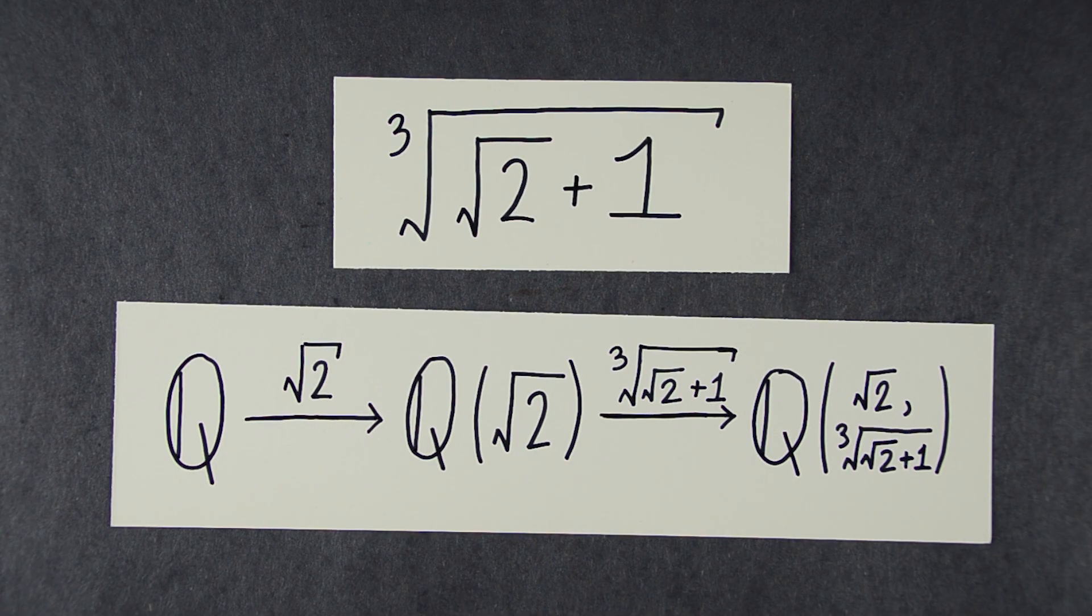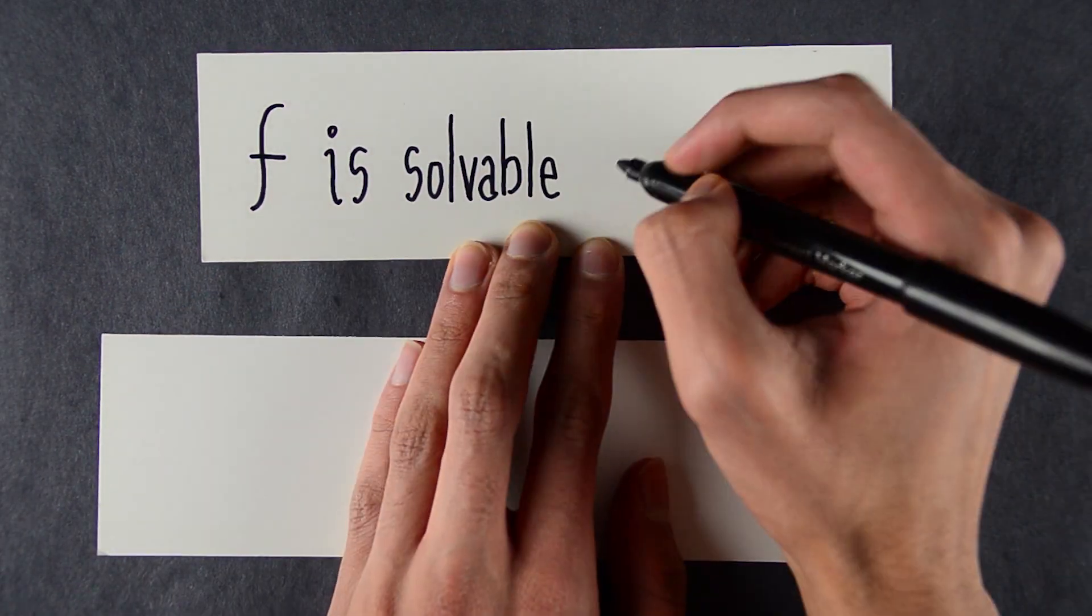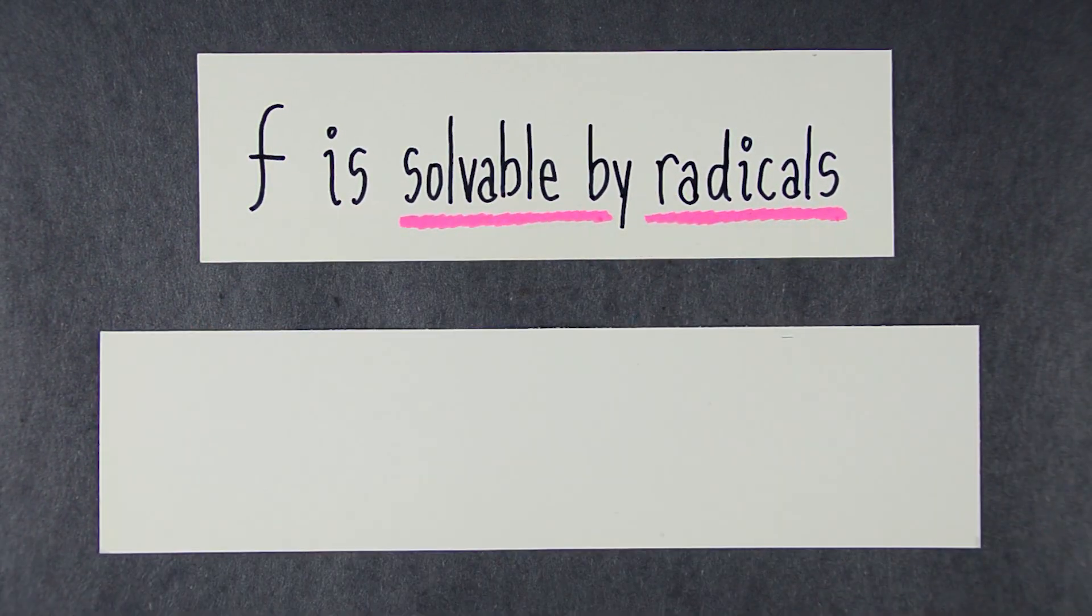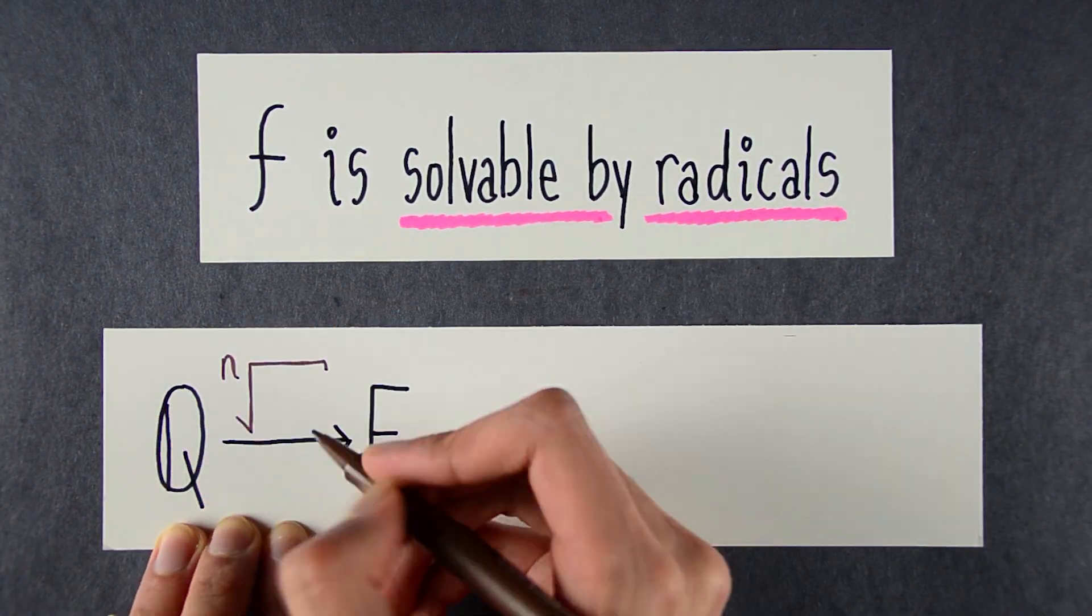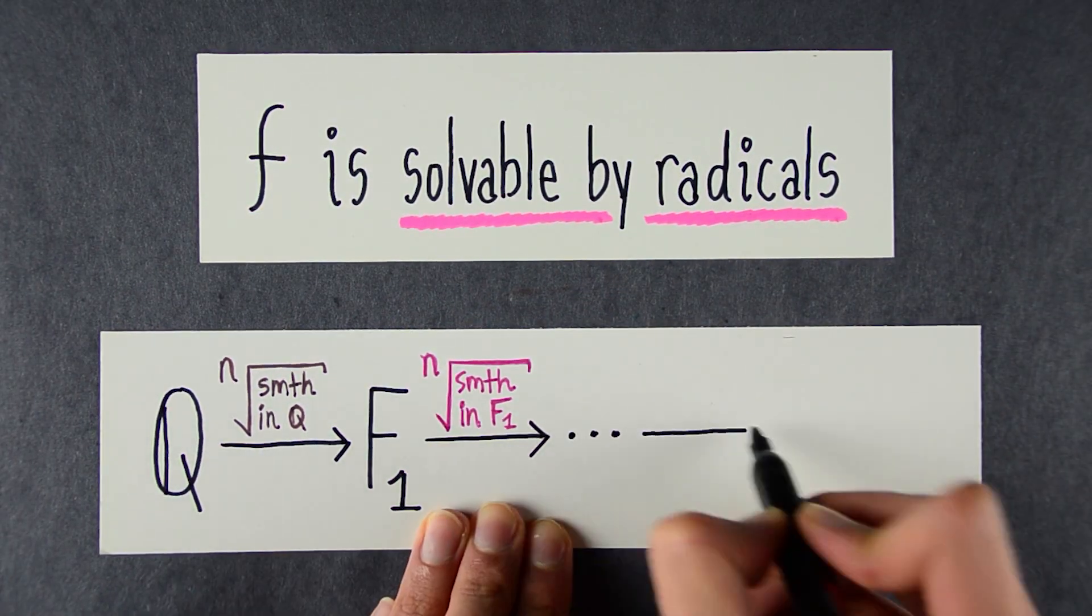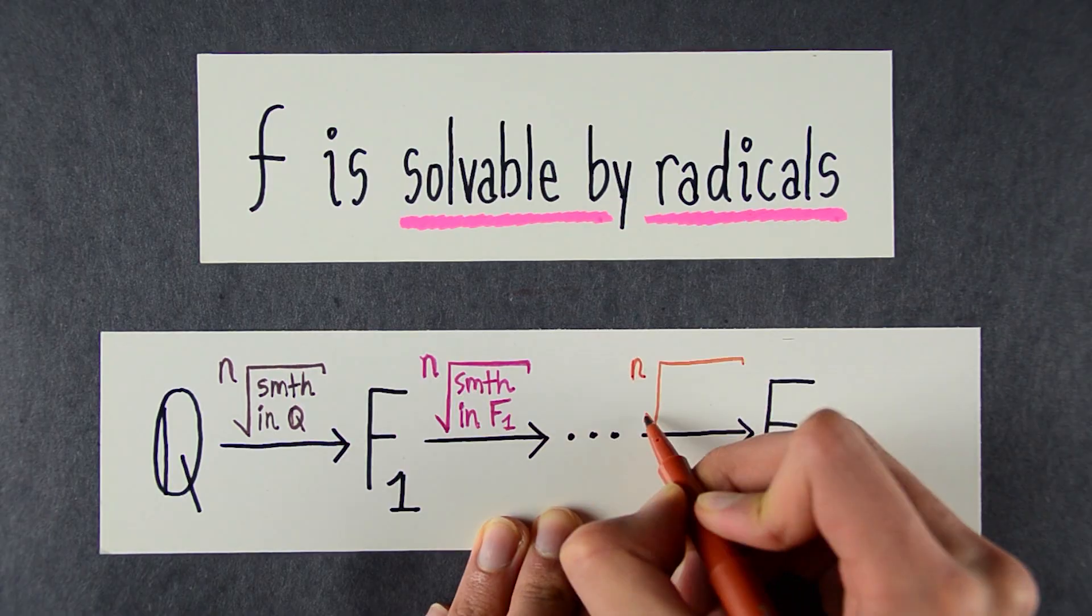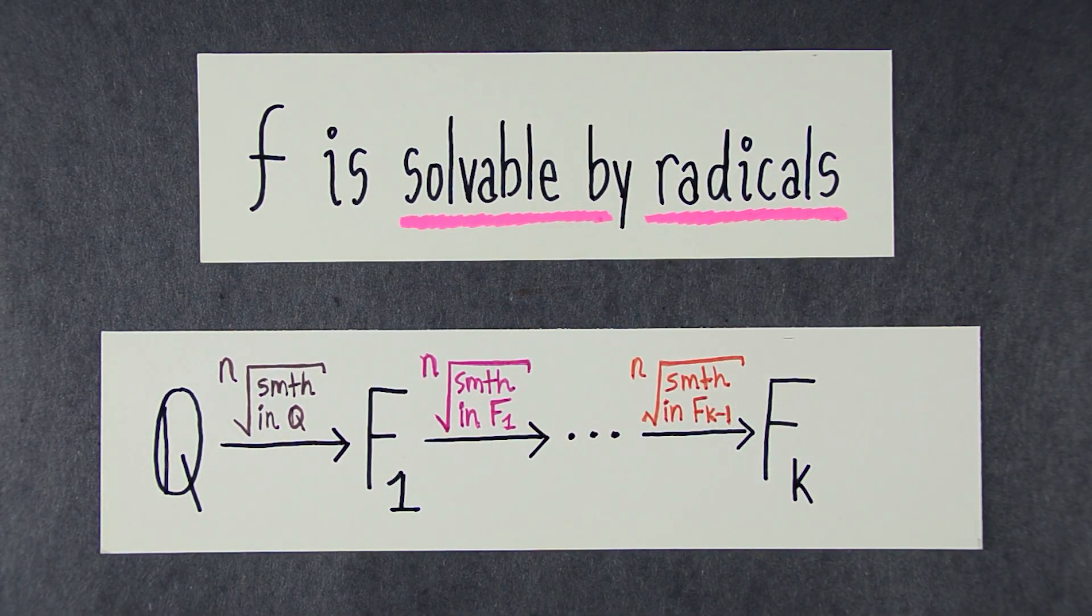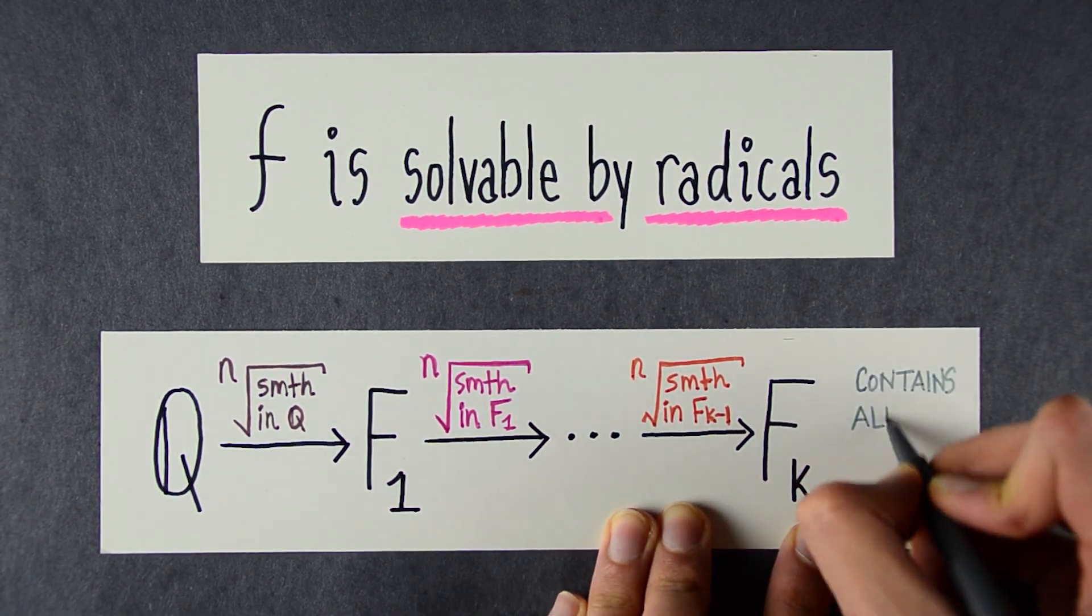That leads us to the key definition. A polynomial f is solvable by radicals if starting with the rationals, you can extend the field one step at a time. At each step, adjoining a root of something that lives in the previous field and eventually arrive at a field containing all the roots of the polynomial.